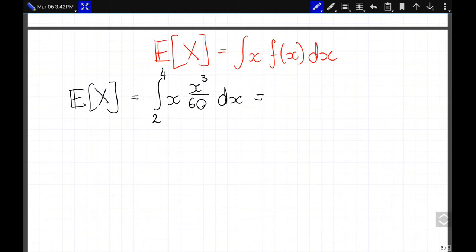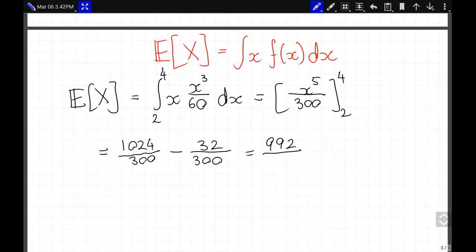And that is x to the 4 over 60. So it's x to the 5 over 5 times 60, which is 300, from 2 to 4. And 4 to the power of 5 is 124 over 300, minus 2 to the power of 5 is 32 over 300. And that is 992 over 300, which simplifies to 248 over 75. And that's our expected value. Thank you very much.